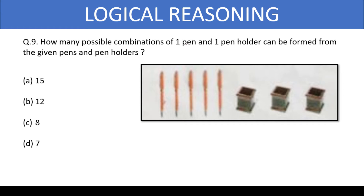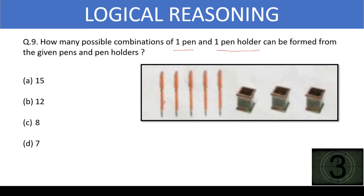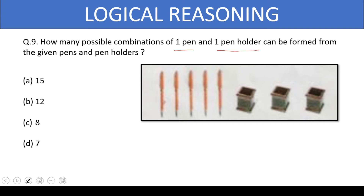How many possible combinations of one pen and one pen holder can be formed from the given pens and pen holders? This is a permutation combination question. Five pens can be arranged in three pen holders — that is five times three, which equals 15. One pen can be placed in three different pen holders, and the same arrangement repeats for all five pens. Hence the answer is five times three, which is option A.